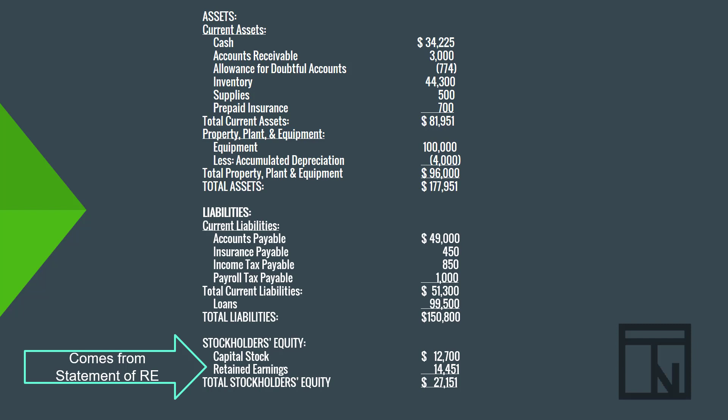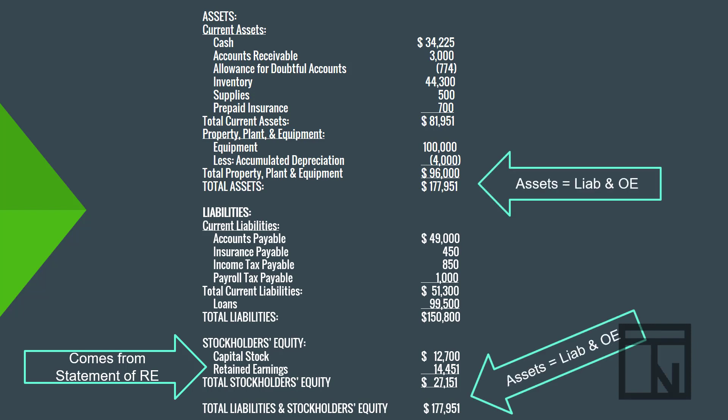Once we have that, we total the stockholders' equity and add it to liabilities. The liabilities and stockholders' equity added together should, if done correctly, equal the assets. If it does, you know you've completed your three financial statements correctly. If it doesn't balance, then the balance sheet or one of the previous financial statements is out of balance and you need to go back and fix it. The balance sheet is the last one we do because it's our check to make sure everything was done right.